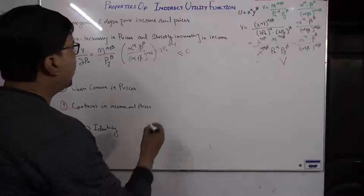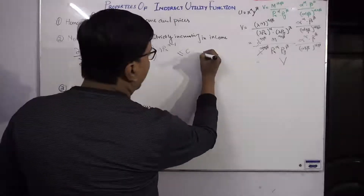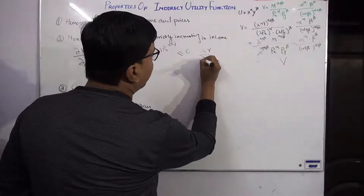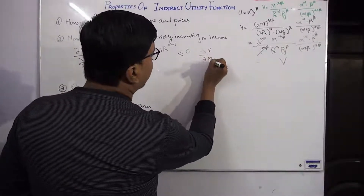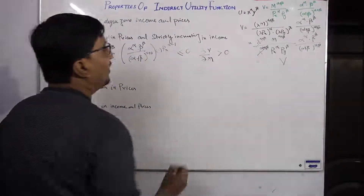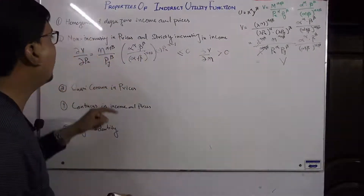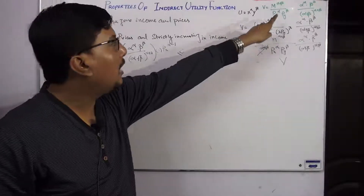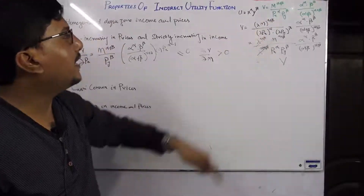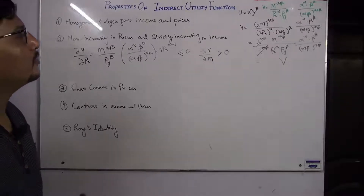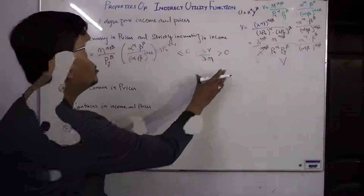The negative sign shows the decreasing relationship, but because the price of Y also exists it can balance it out, so the partial derivative is either zero or less than zero — hence 'non-increasing' in prices. The second part is that V is strictly increasing in income: the partial derivative of V with respect to M is positive, since M appears in the numerator.